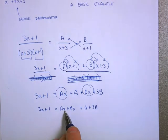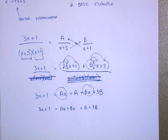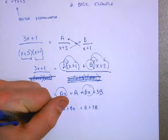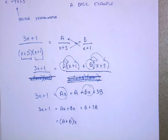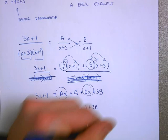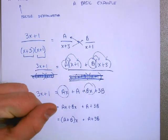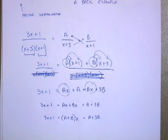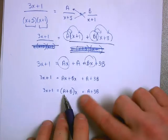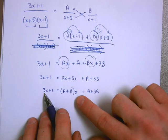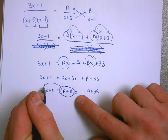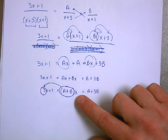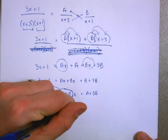So here's the deal. Notice that these are the only two things, the only two things that have an x in them on the right side. So if I wanted to, I could rewrite this as (A+B) times x. I could factor out the x. Plus A+3B has to equal 3x+1. Stay with me. What that means, if these two terms add up to 3x, because they're the only things with x's in them, that means that this A+B here must add up to 3. A+B must add up to 3.